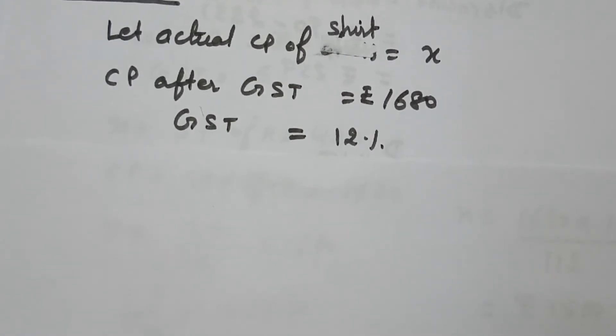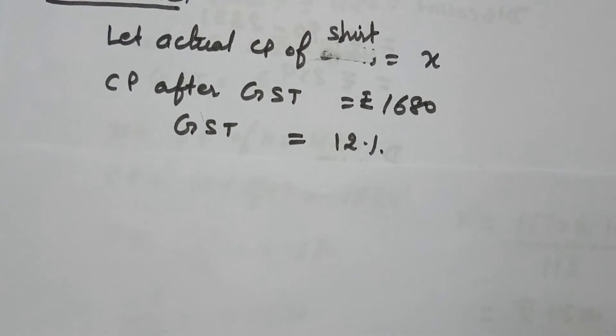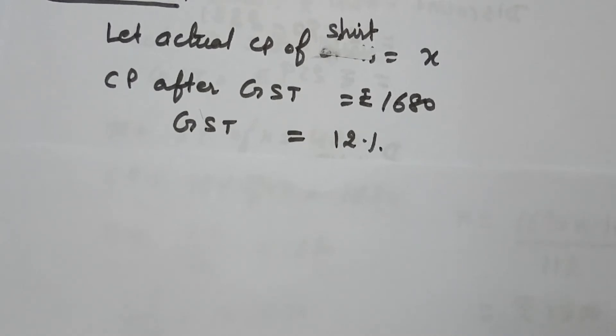So here, let the actual cost price of the shirt be X. The cost which he has paid including GST is Rs. 1680 and GST paid is 12%.